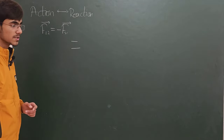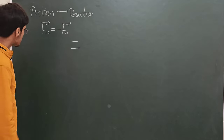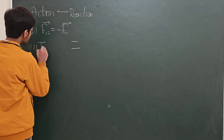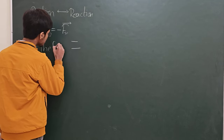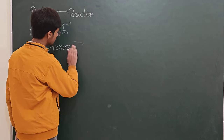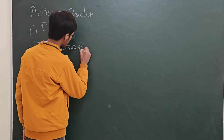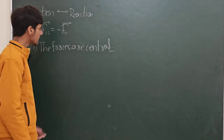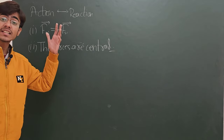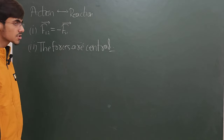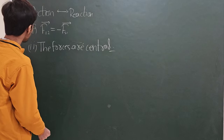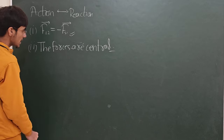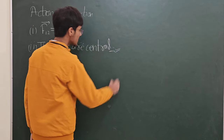The first condition for an action-reaction pair is that the force on object one is the negative of the force on object two — they are vectorially equal and opposite. The second condition, which is really ignored in most textbooks but is very important, is that the forces are central.